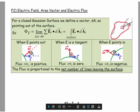And when the electric field is pointing into the Gaussian surface, then the angle between the electric field and the area vector is going to be more than 90 degrees and less than 180 degrees, which will be a negative value. So the flux associated with that would have a negative sign.